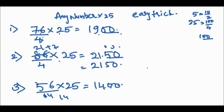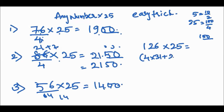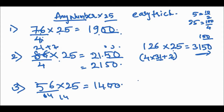Now a three-digit number: 126 into 25. We write 126 = 4 × 31 + 2. So 31 comes here, and the remainder 2 gives 25 × 2 = 50. The answer is 3150. This trick works for any number multiplied by 25 and reduces calculation time.